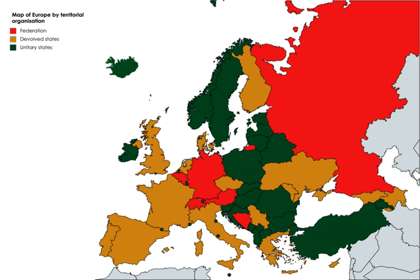Fiscal federalism refers to the relative financial positions and the financial relations between the levels of government in a federal system. Formal federalism refers to the delineation of powers as specified in a written constitution, which may or may not correspond to the actual operation of the system in practice. Executive federalism refers in the English-speaking tradition to the intergovernmental relationships between the executive branches of the levels of government in a federal system.